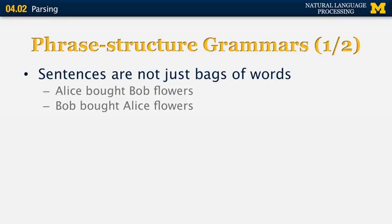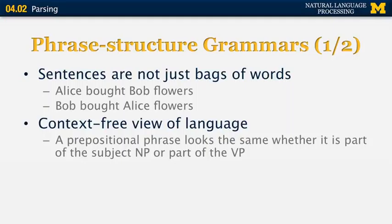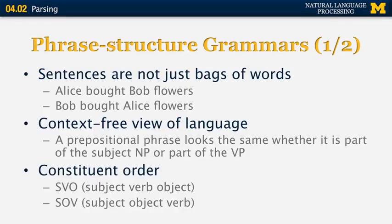Phrase structured grammars are important because sentences are not just bags of words. For example, 'Alice bought Bob flowers' is distinct from 'Bob bought Alice flowers' — a parser helps us understand that in the first sentence Alice is the subject, whereas in the second Alice is the recipient. Phrase structured grammars enforce the context-free view of language, which is why 'phrase structured grammar' and 'context-free grammar' mean the same thing. This view tells us that a prepositional phrase has the same internal structure regardless of whether it is part of a subject noun phrase or a verb phrase. Constituent order also matters — some languages are subject-verb-object and others are subject-object-verb.